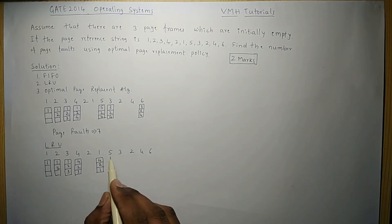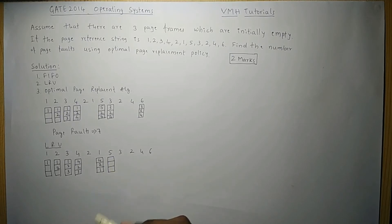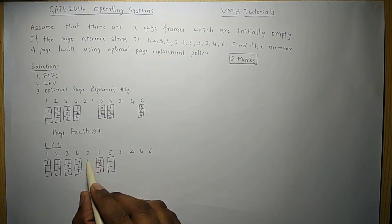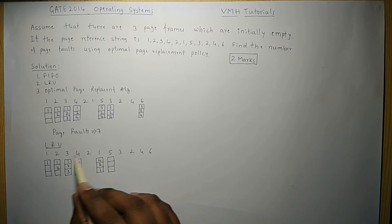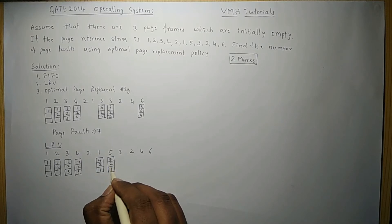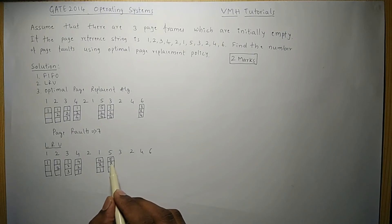The next reference is for page 5, which is not available — page fault. Looking at past references: page 1 was used most recently, then page 2, and page 4 was used least recently. So page 4 is replaced with page 5. The frames now hold 5, 2, and 1.